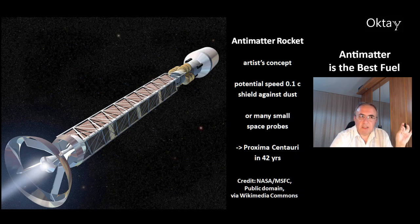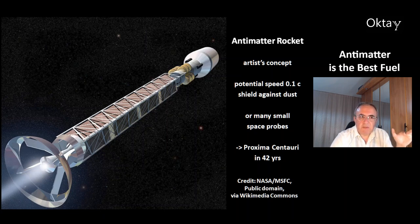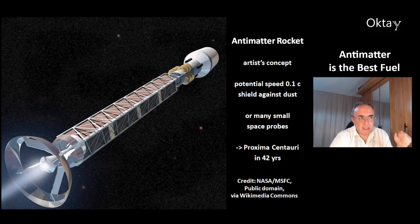This artist's concept of an antimatter rocket could potentially reach 10% of the speed of light. But at these speeds, even a tiny dust grain could destroy the rocket, which is why you need extra shielding against dust. An alternative is to send many small spacecraft — some will be destroyed and some will make it to the destination. With an antimatter rocket, you could potentially reach Proxima Centauri in 42 years.